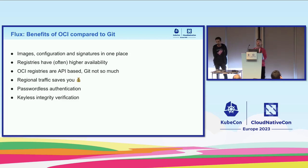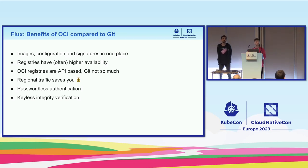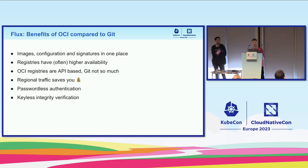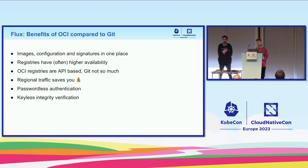The benefits of OCI compared to Git: you have your image configurations, signatures, and everything in one place. You only need to authenticate with one thing, one endpoint that has all your stuff. Registries often have higher availability — I don't know if any of you use GitHub, you get the point. OCI registries are API-based. Git has some APIs like remote LS commands to get the latest references for a tag, but no other way of going through the stored data. Regional traffic also saves you money — if your Git host is on the other side of the world, it's expensive to pull from it all the time.